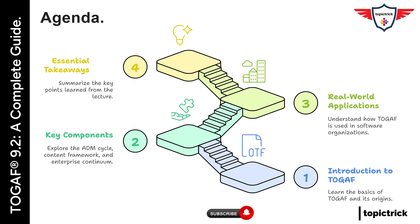So, what are we covering today? First, we'll briefly explore what TOGAF is and why it was created. Then, we'll break down its key components in plain terms, like the ADM cycle, content framework, and enterprise continuum. We'll also look at how software organizations use TOGAF in real-world scenarios. Finally, we'll wrap up with the essential takeaways you should walk away with.